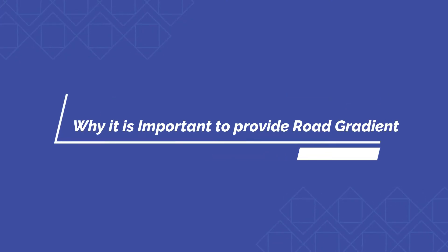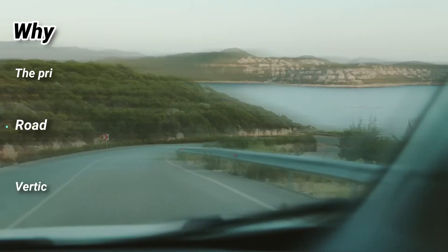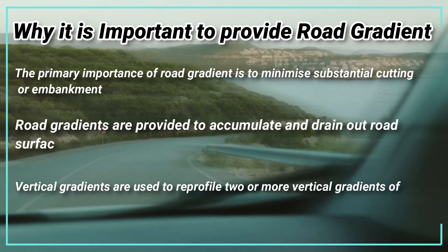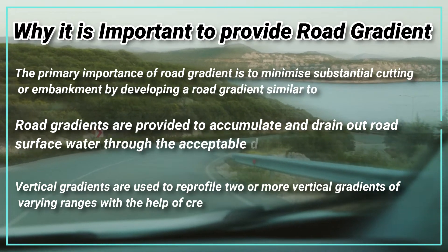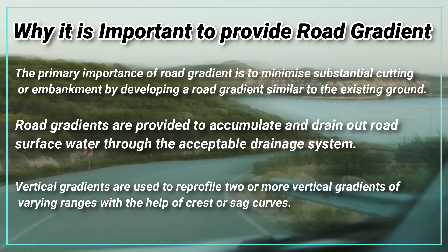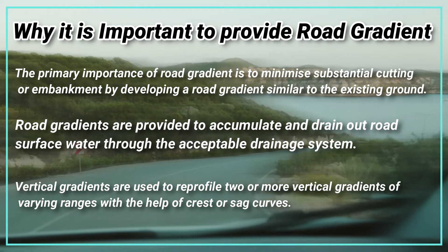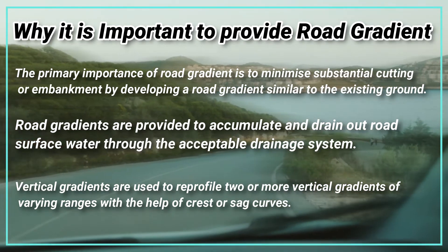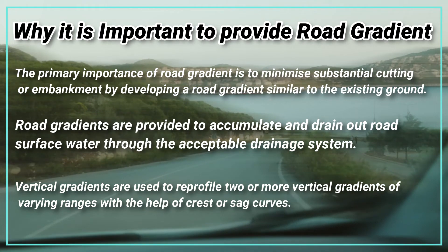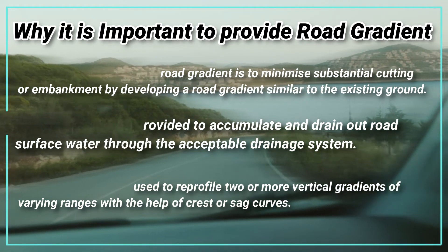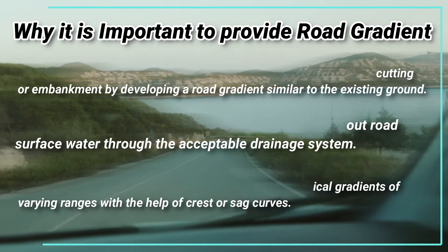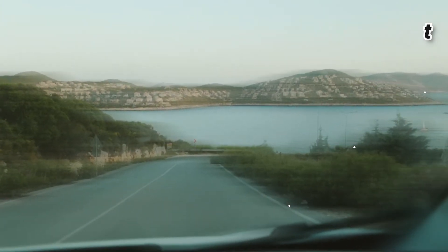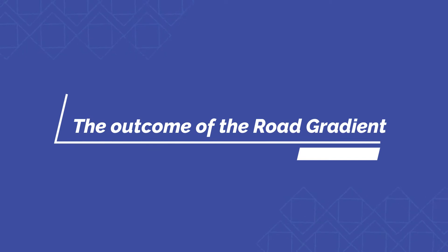The primary importance of road gradient is to minimize substantial cutting or embankment by developing a road gradient similar to the existing ground. Road gradients are also provided to accumulate and drain out road surface water through the acceptable drainage system. Vertical gradients are used to reprofile two or more vertical gradients of varying ranges with the help of crest curves.